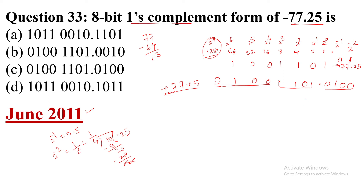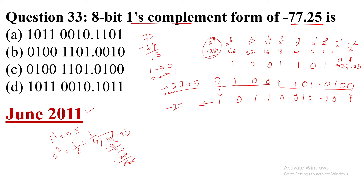Now applying one's complement — ones become zeros and zeros become ones. The one's complement of -77.25: the sign bit becomes 1, indicating a negative representation. The resulting 12-bit one's complement value is 1 0110010.10.